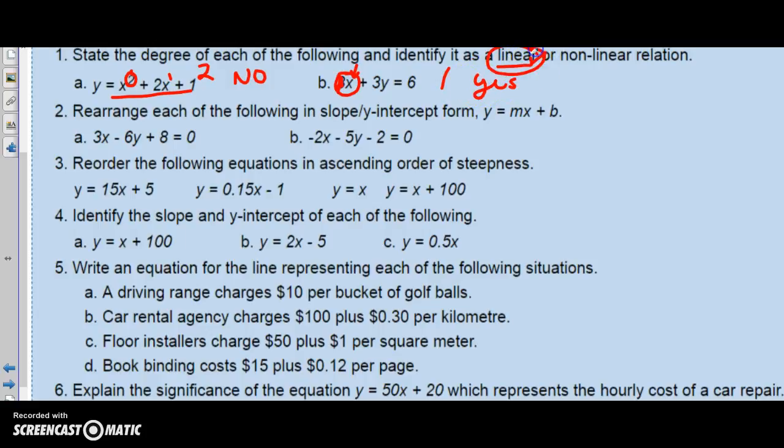Okay, rearrange each of the following into this form, y equals mx plus b form. Again, the reason we do this is once we have it in this form, we know the slope, we know the y-intercept, and then we have some information. This is fine, but I don't have any info here. There's nothing here that's saying this line looks like that, or this line is steeper than that line, or starts higher or starts lower. But once we get in this form, we can compare.